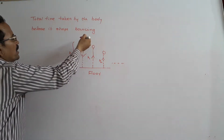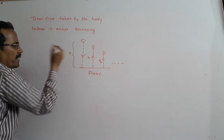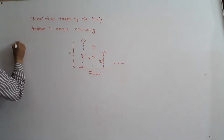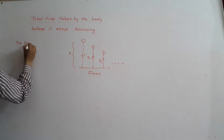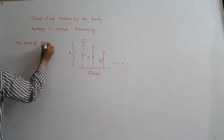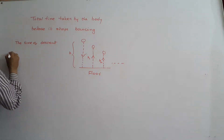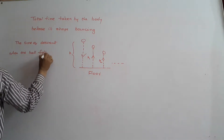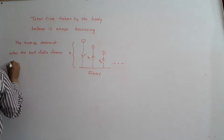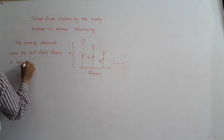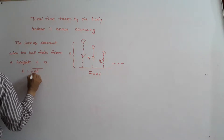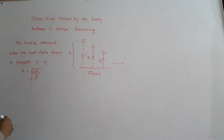First, the ball is falling from a height H. For this, the time of descent T is equal to the square root of 2H by g. This is the time of descent.